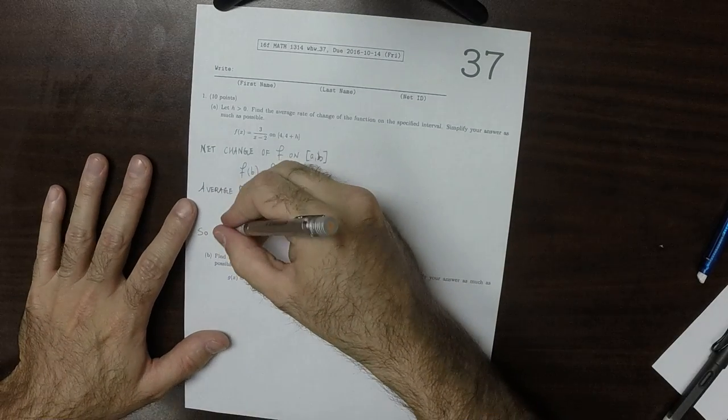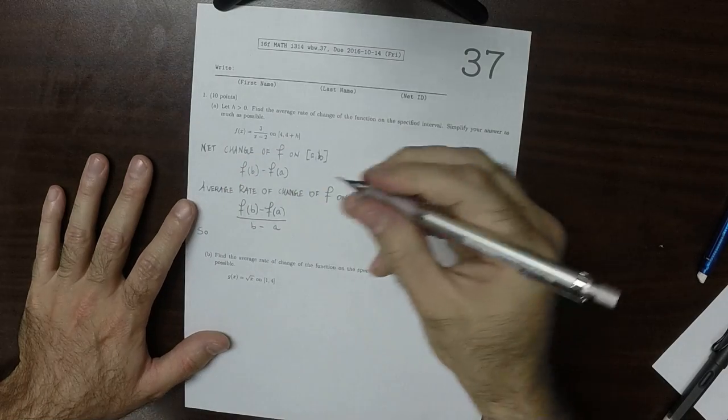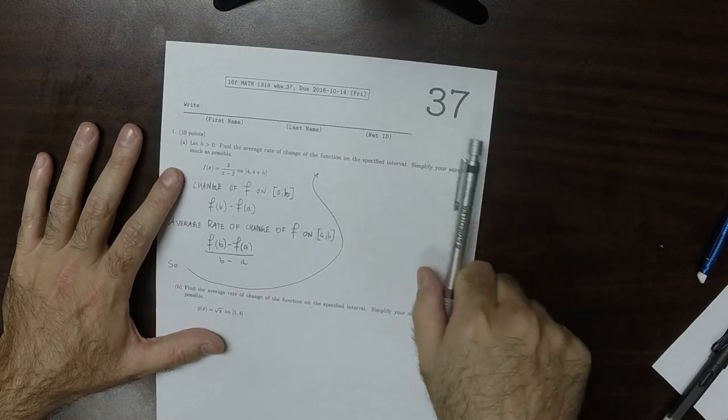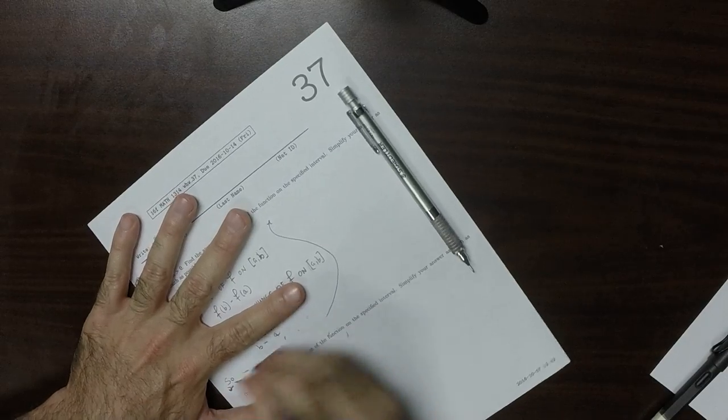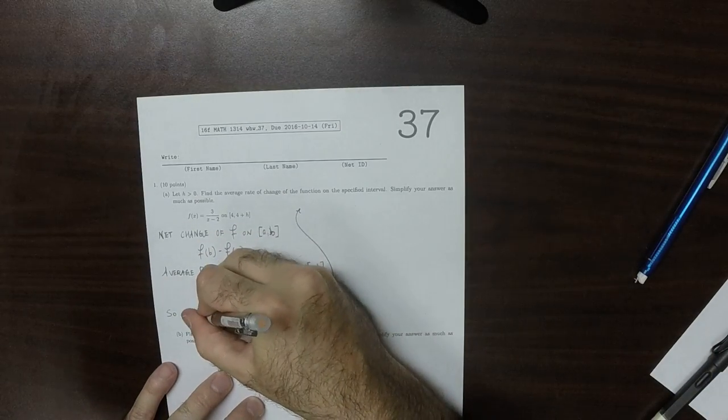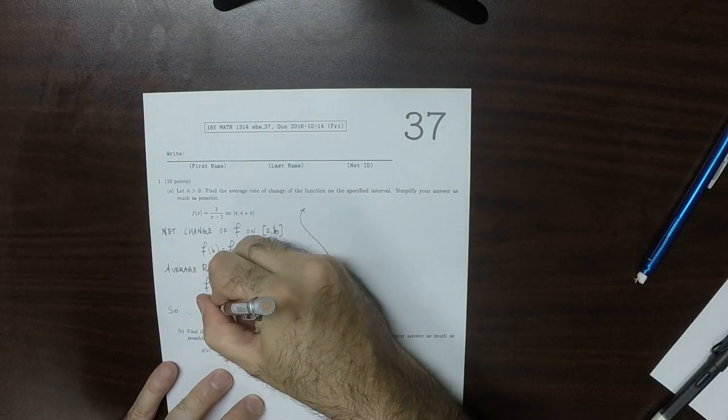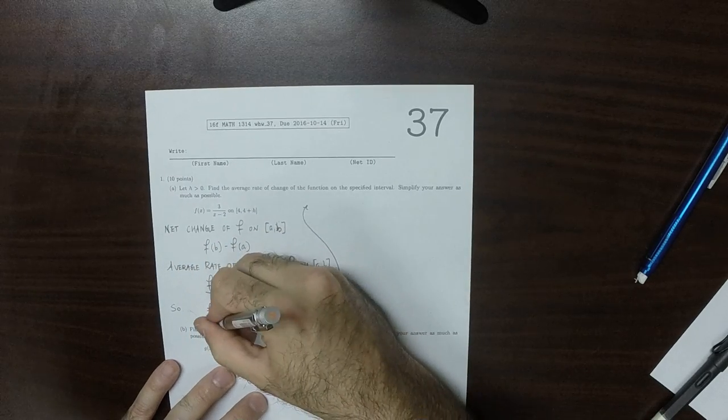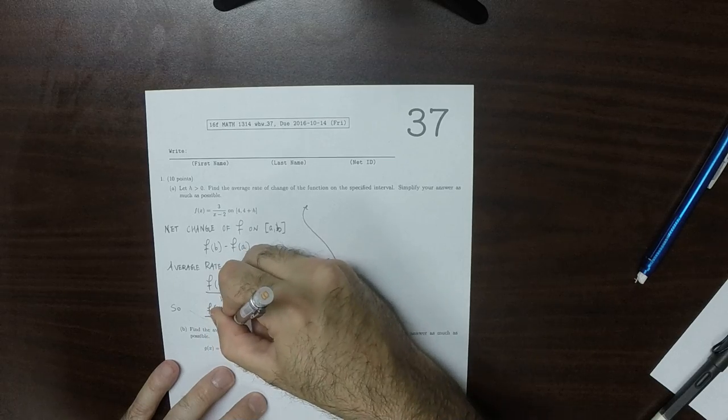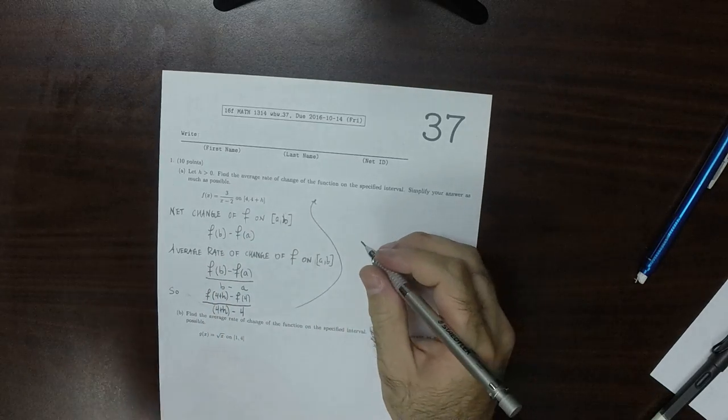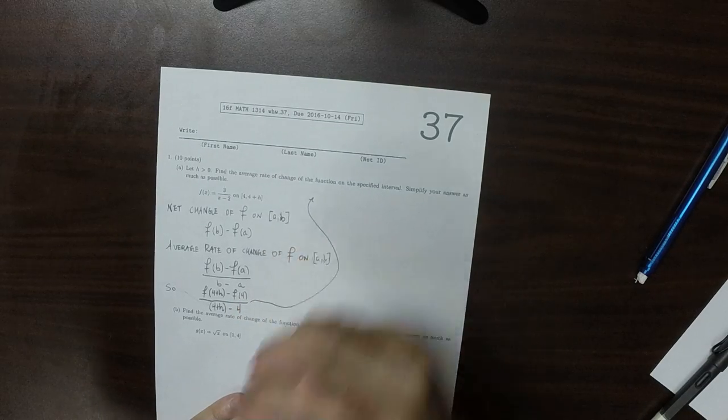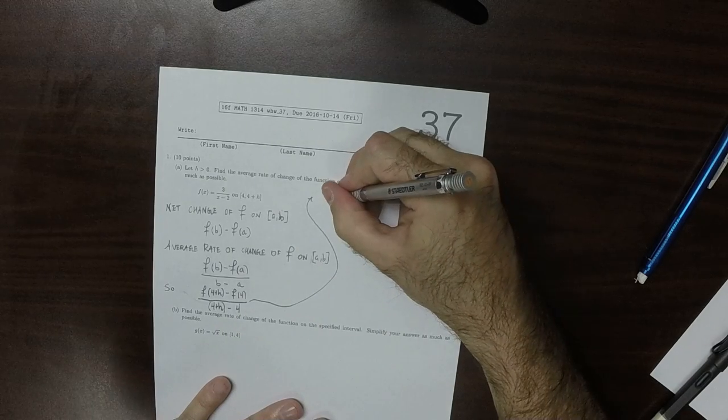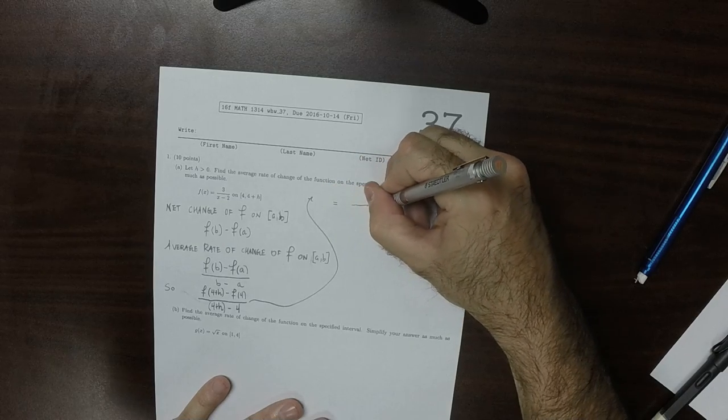On this particular exercise, that would be F(X+H). That would be F(4+H) minus F(4) over 4+H minus 4. Then the denominator can be simplified because the fours cancel and all that would remain in the denominator is just H.